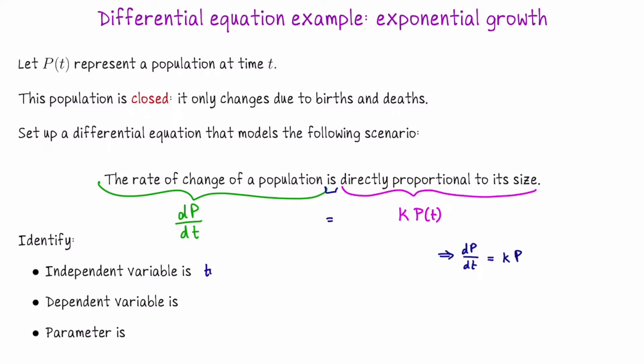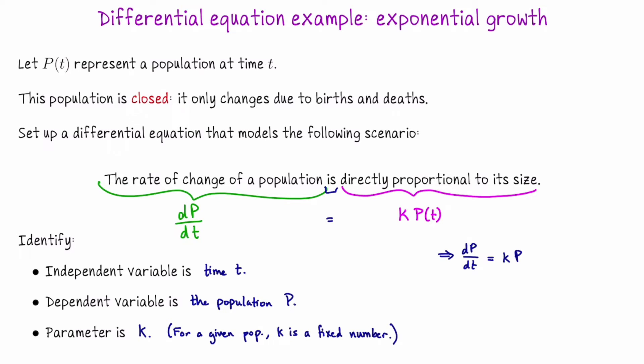It's first order because we have a first derivative. The independent variable is time t — if you wrote this as p prime equals kp, the t is in the background. The dependent variable is the population P, which depends on time. The parameter k is a fixed number for a given population that doesn't change over time. While this equation might be appropriate for two different types of bacteria, they might have different constants of proportionality — so k is a constant you tweak to adjust the equation to different real-world scenarios.